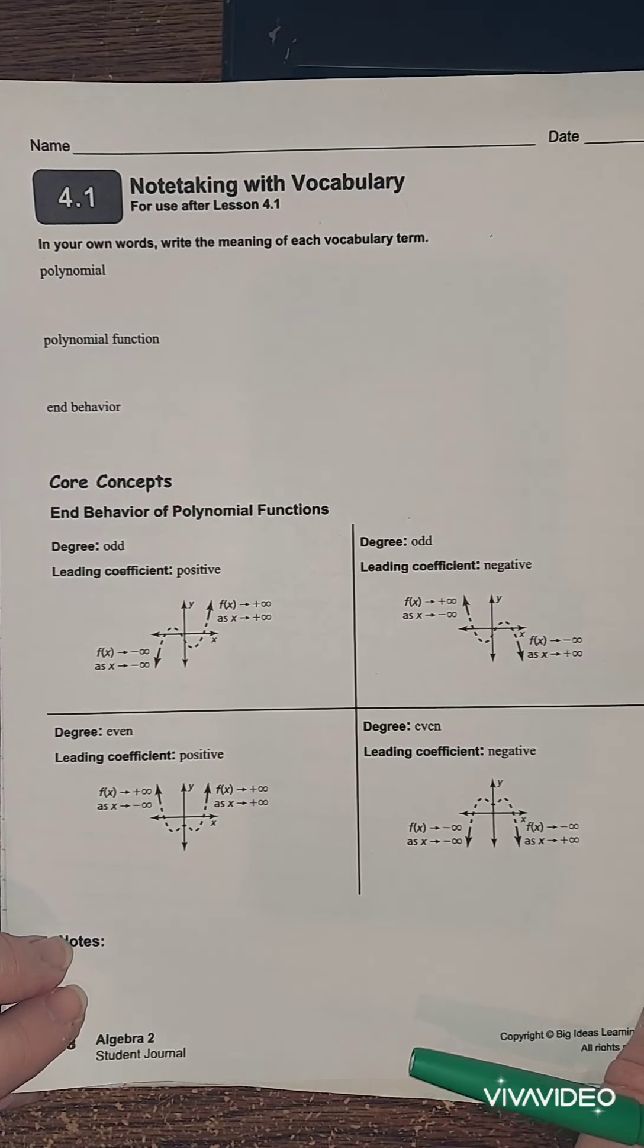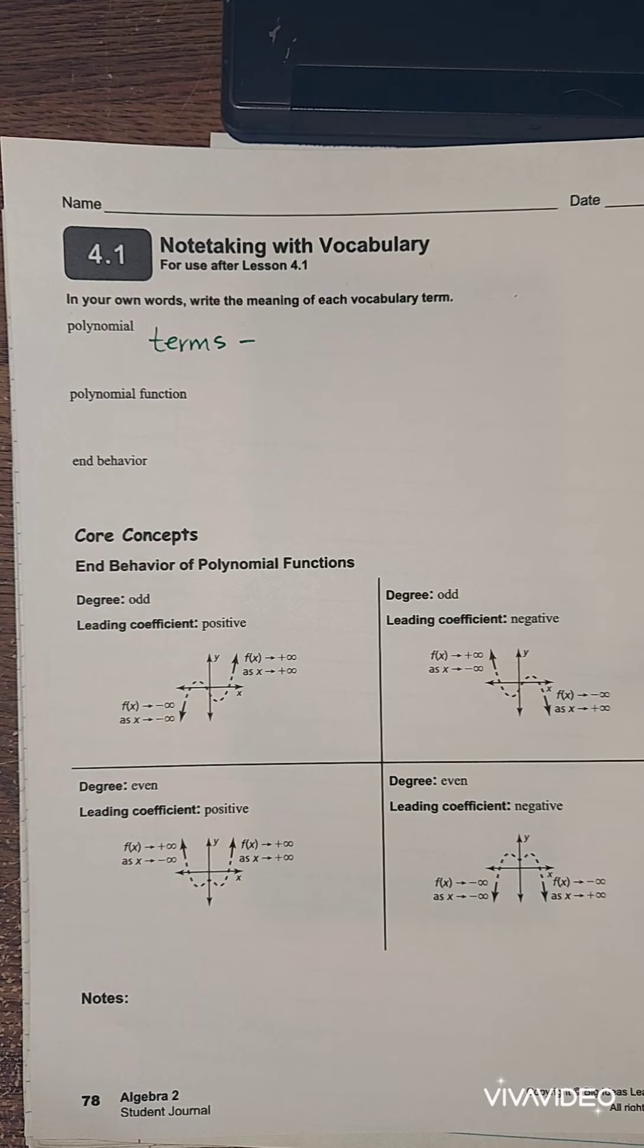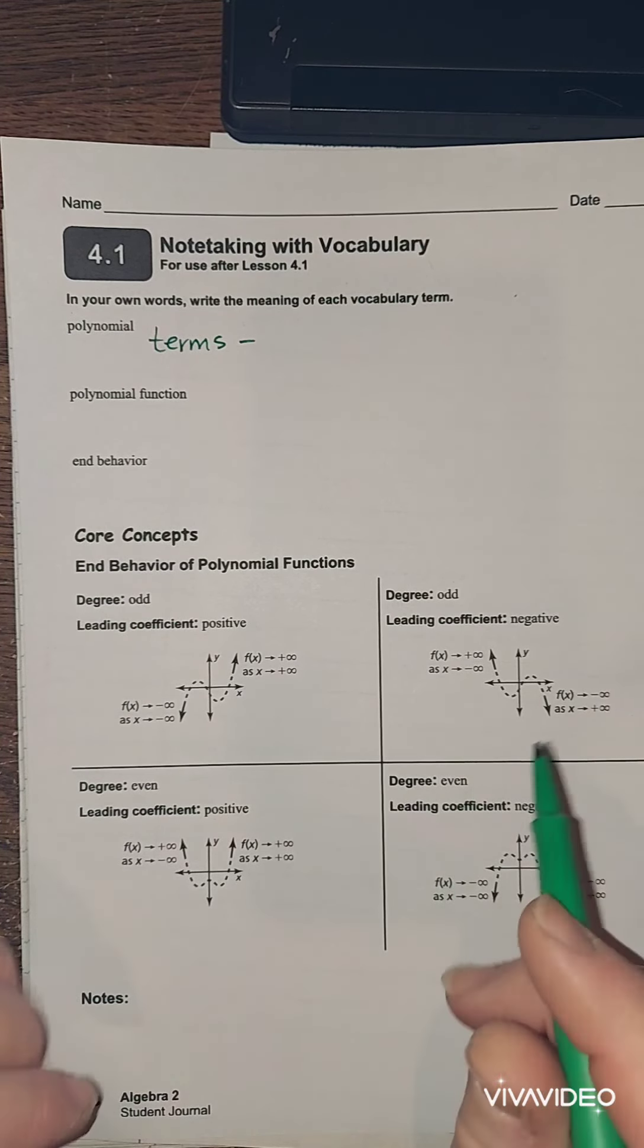A polynomial function and what this end behavior is talking about. So a polynomial has several terms, okay, several terms, and it can be, doesn't have to be x squared. Actually, x squared and linear actually talk about polynomials, so more than one term.